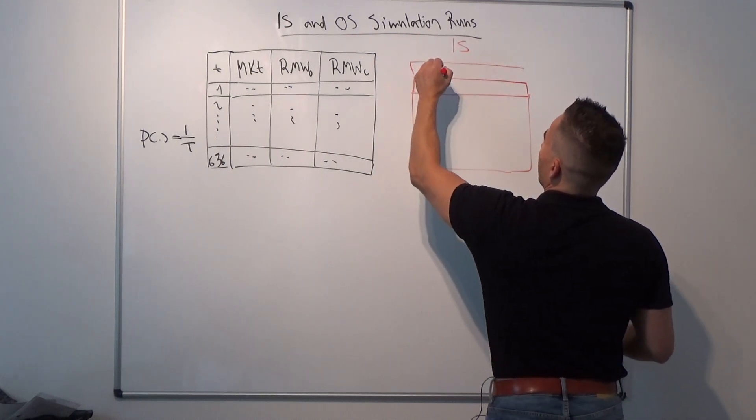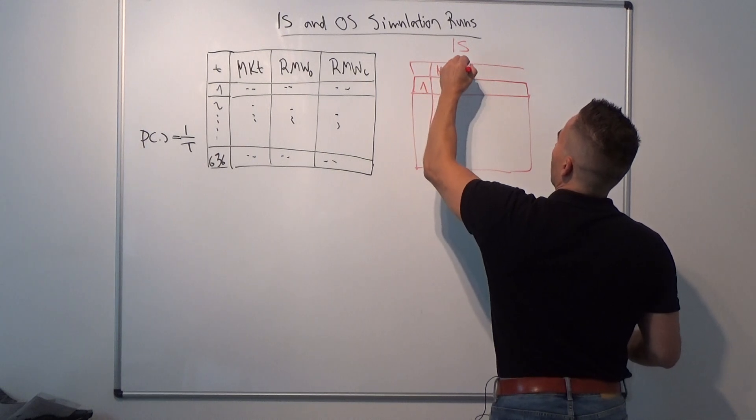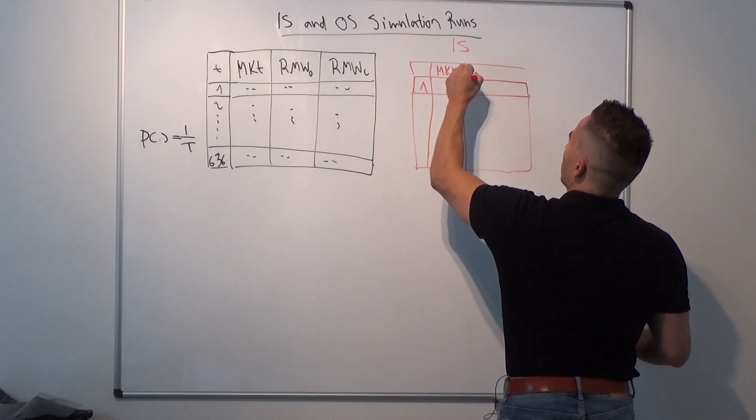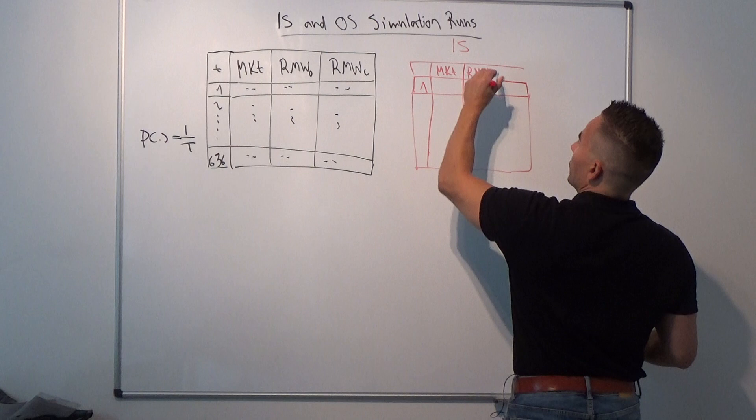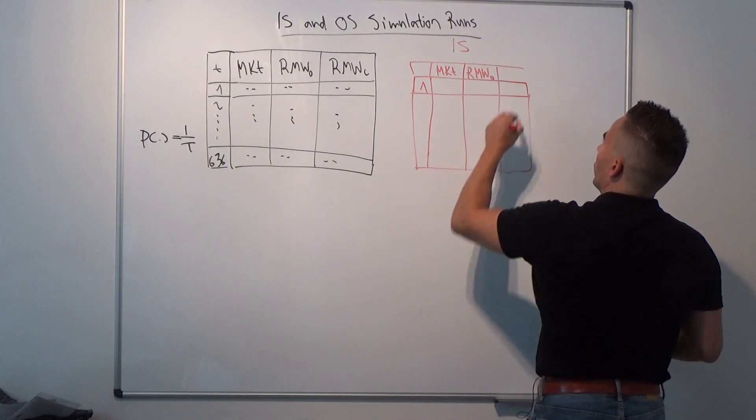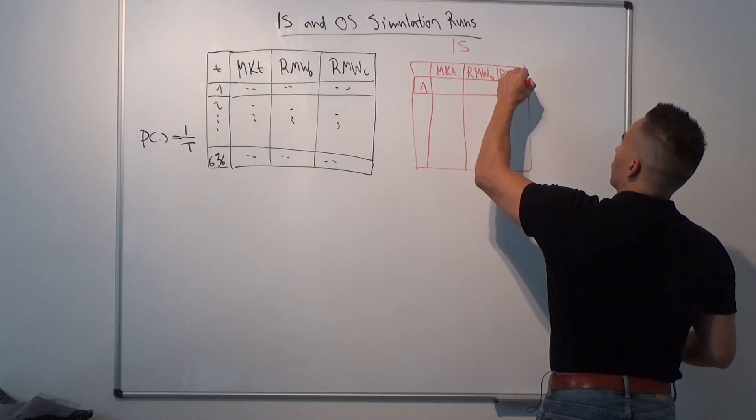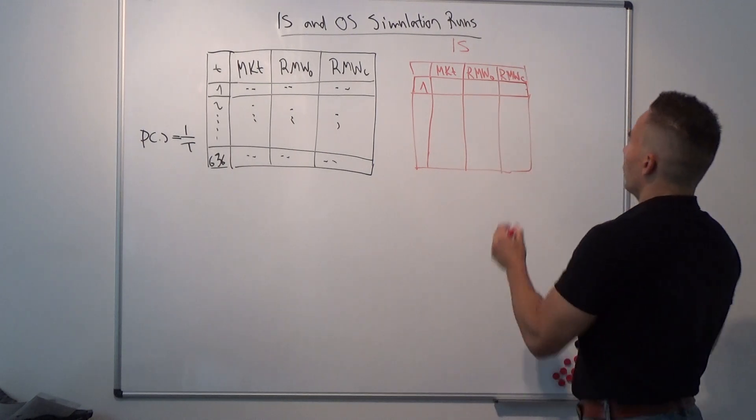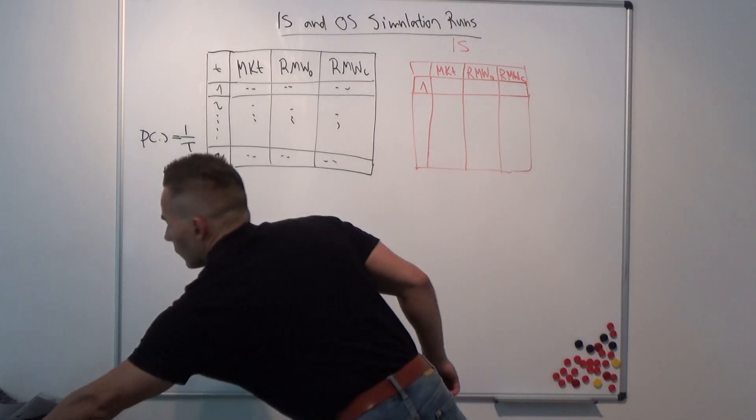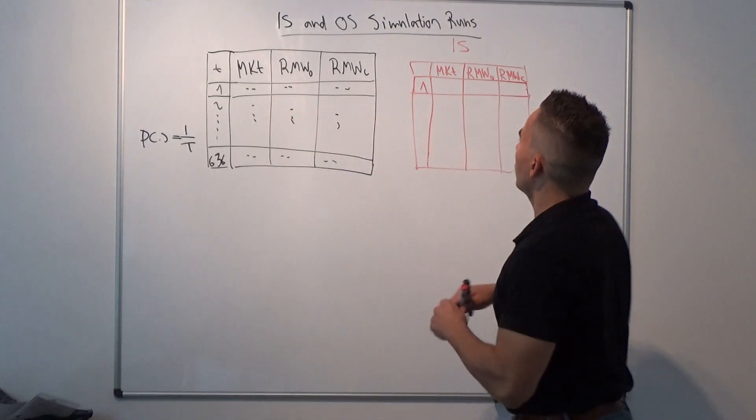So we have here the market factor, the profitability factor RMWO, and the profitability factor RMWC. So let's say we take the seventh row from here and put it here.